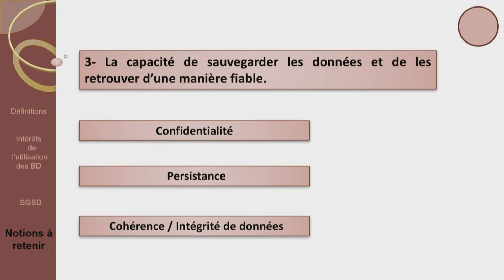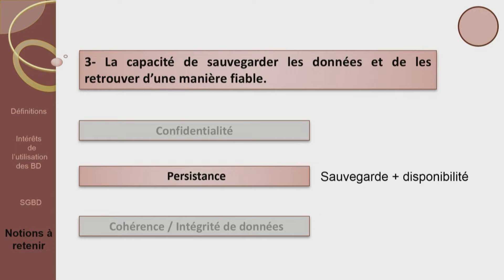Ça ne peut pas être la confidentialité, qui consiste à donner les droits d'accès aux utilisateurs pour maîtriser l'accès aux données. Ça ne peut pas être la cohérence, qui est la reproduction de la réalité dans la base de données. Ça ne peut être que la persistance des données, qui veut dire sauvegarde et disponibilité.